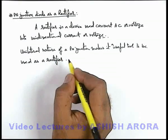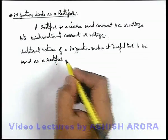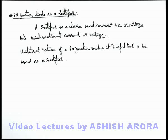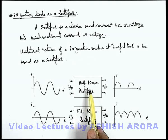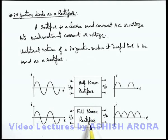Let's discuss the block diagram of a rectifier — how it works for a given alternating current. This picture shows the block diagram of two different types of rectifiers: one is a half wave rectifier and the other is a full wave rectifier.